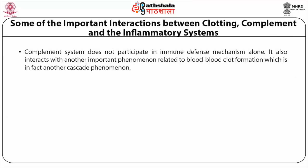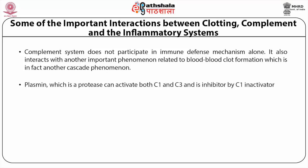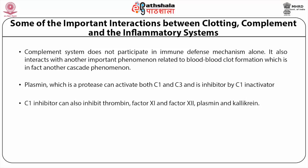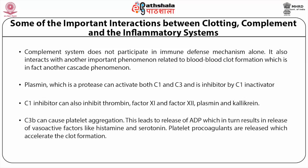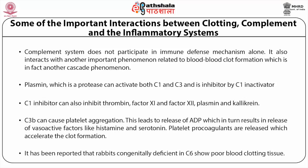The complement system does not participate in immune defense alone — it also interacts with blood clot formation, which is another cascade phenomenon. Plasmin, which is a protease, can activate both C1 and C3 and is inhibited by C1 inactivator. C1 inhibitor can also inhibit thrombin, factor 11, and factor 12, as well as plasmin and kallikrein. C3b can cause platelet aggregation, leading to release of ADP, which results in release of vasoactive factors like histamine and serotonin. Platelet procoagulants are released, accelerating clot formation. Rabbits congenitally deficient in C6 show poor blood clotting.